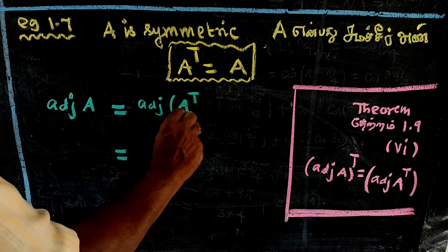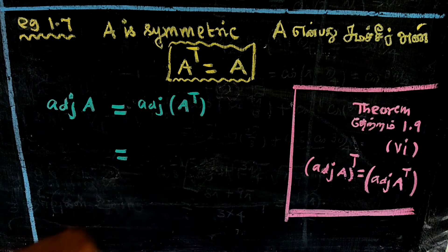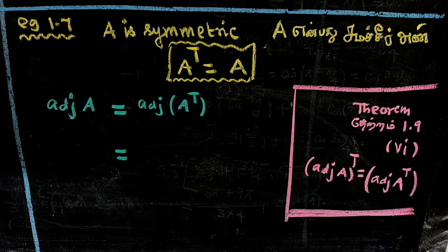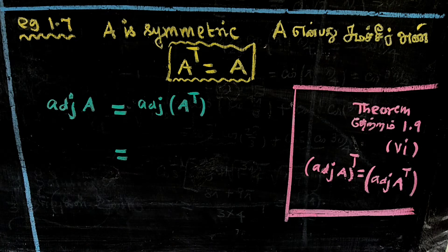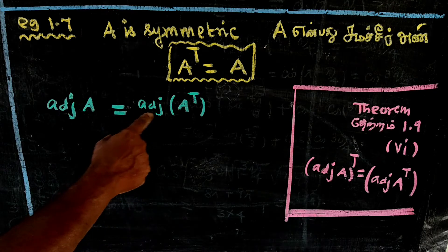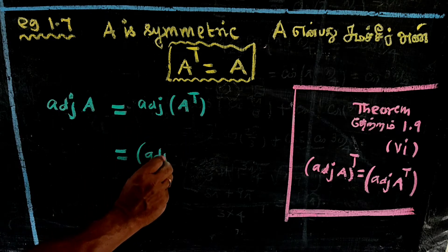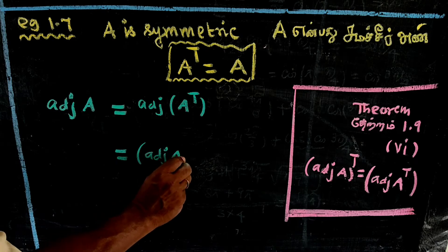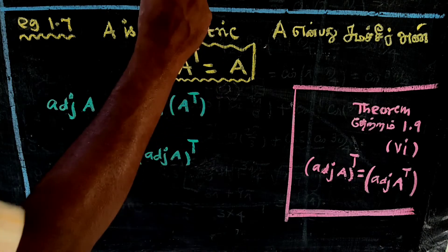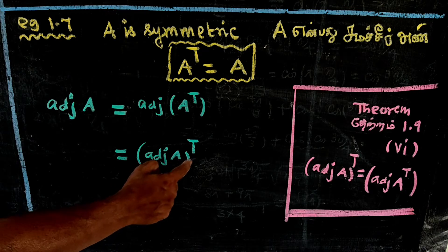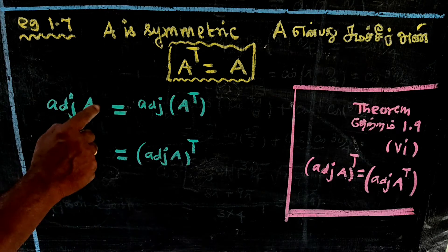By Theorem 1.9, point 6: (AᵀA) whole transpose is equal to Aᵀ of A transpose. What can we do with Aᵀ of A transpose? (AᵀA) whole transpose is equal to Aᵀ of A transpose.